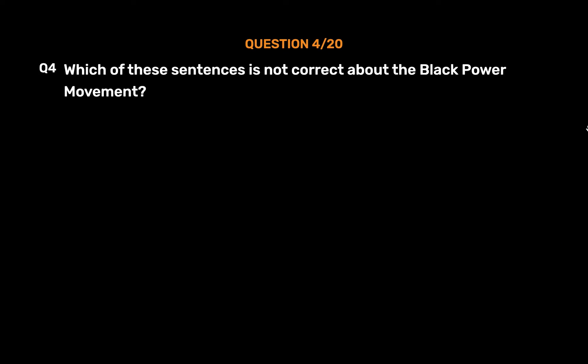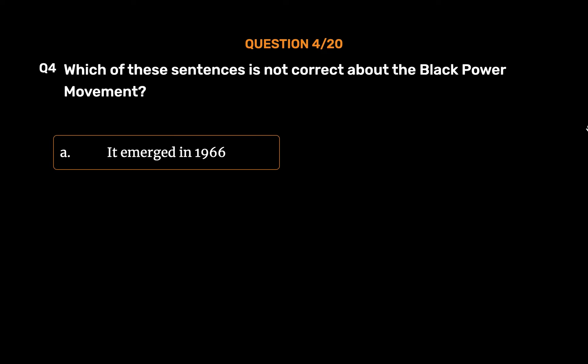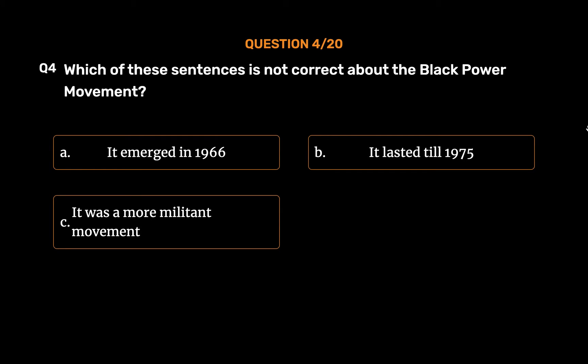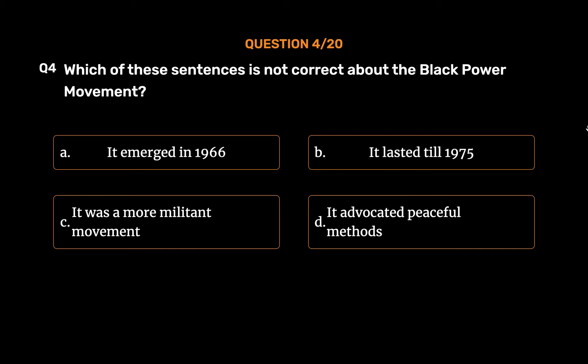Question number 4. Which of these sentences is not correct about the Black Power Movement? Option A: It emerged in 1966. Option B: It lasted till 1975. Option C: It was a more militant movement. Option D: It advocated peaceful methods.